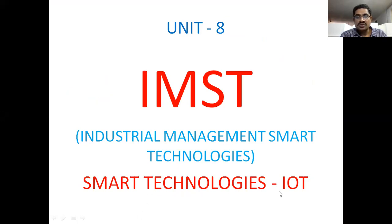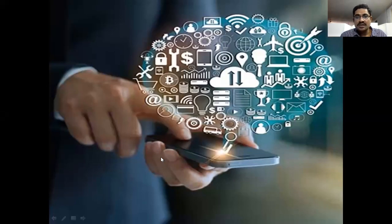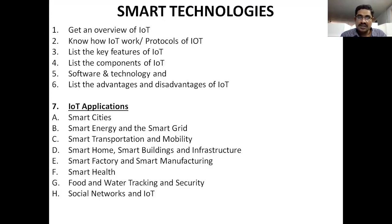Smart technologies is also known as IoT — Internet of Things. Simply, these are just different apps and applications we are using in our mobile for smart life. In this last unit, we have only seven topics. The first one is an overview of IoT, meaning introduction to Internet of Things.